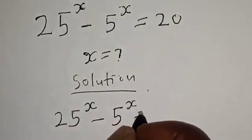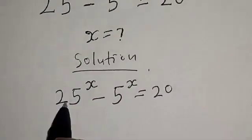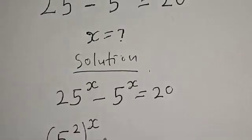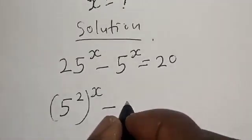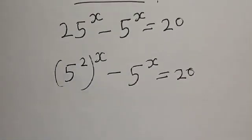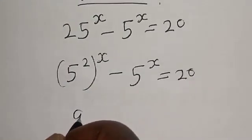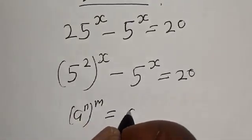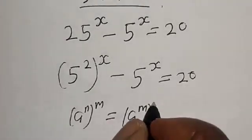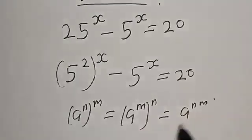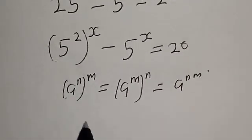The original equation is: 25 raised to power x minus 5 raised to power x is equal to 20. Now, 25 raised to power x is the same thing as 5 squared raised to power x, minus 5 raised to power x equals 20. Using the identity: a raised to power n raised to power m equals a raised to power nm.